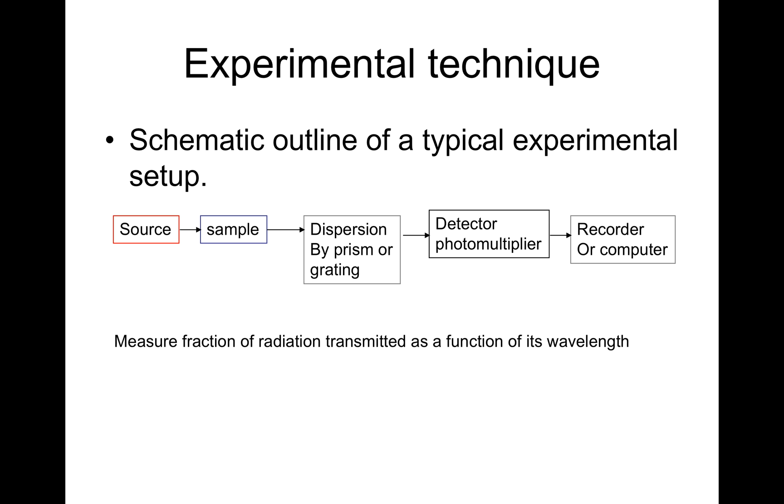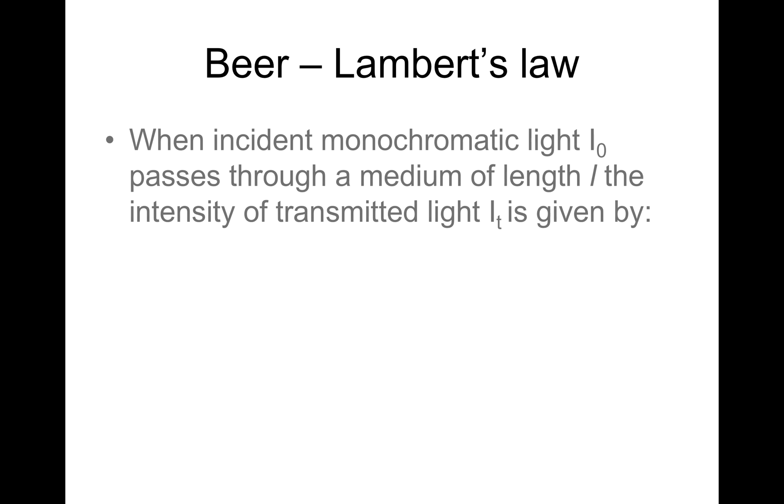Beer-Lambert's law: when incident monochromatic light I₀ passes through a medium of length l, the intensity of the transmitted light It is given by It = I₀ e^(-κcl).